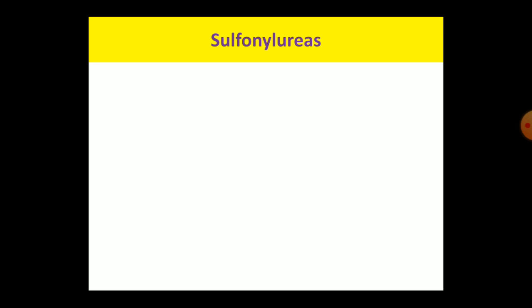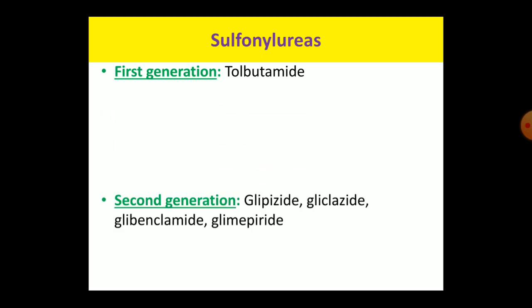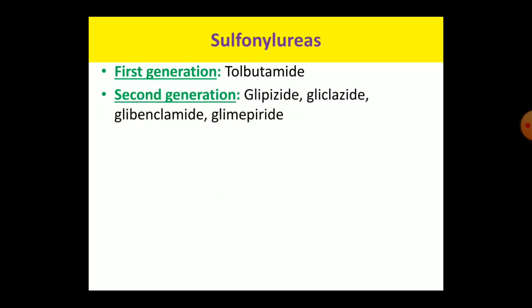Sulfonylureas are classified into two generations: first generation and second generation. Some sources classify them as first, second, and third generation. These differences in generation are according to their discovery. First generation compounds include tolbutamide, and in the second generation: glipizide, gliclazide, glibenclamide, and glimepiride. Apart from the time of discovery, the second generation compounds are more potent and clinically more superior compared to first generation.